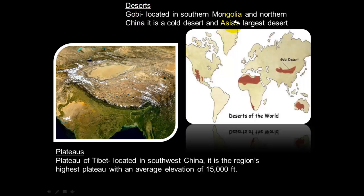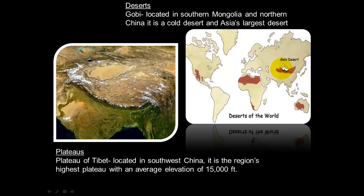Next we'll briefly discuss deserts. Looking at major deserts of the world — we can see North Africa and the United States — but what we're focusing on today is the Gobi Desert. The Gobi Desert is located in southern Mongolia and northern China. It is a cold weather desert. Not all deserts are hot; Antarctica and the Gobi Desert are cold weather deserts. The Gobi Desert is Asia's largest desert.